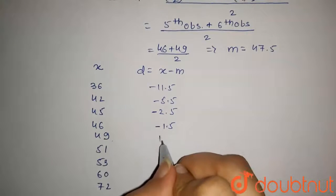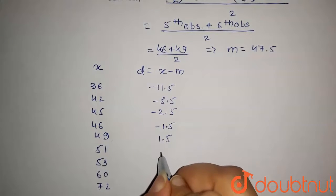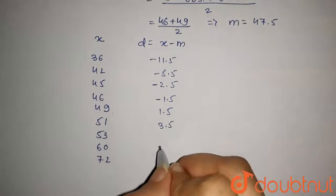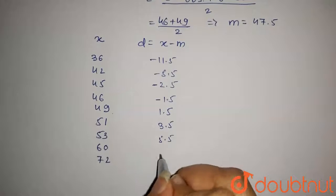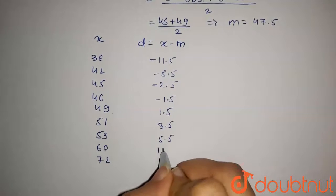This will be 1.5 for 49. For 51 it will be 3.5. For 53 it will be 5.5. 60 minus 47.5 will be 12.5.